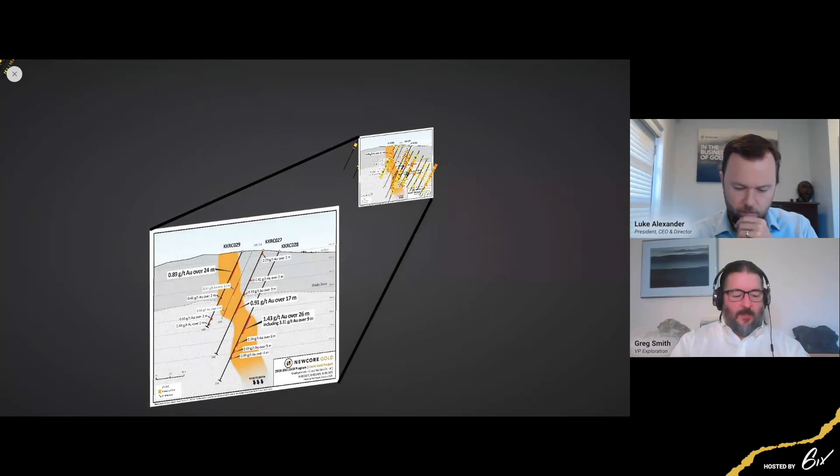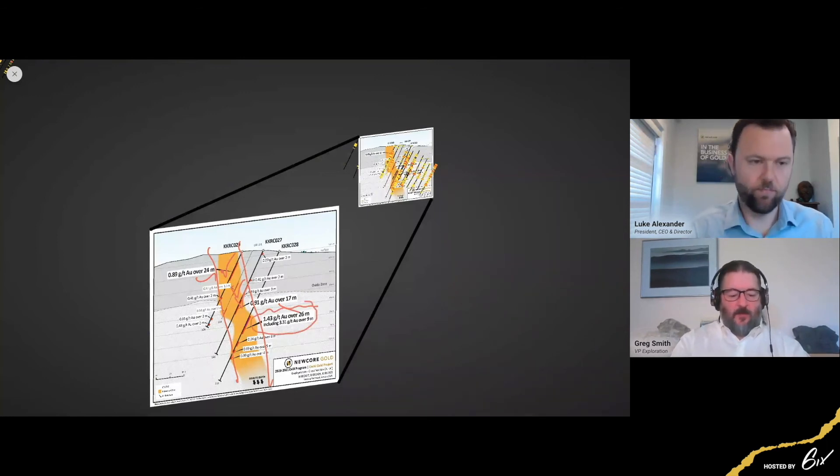So here's one of the sections. Good interpretation here, hitting the mineralization in all of these holes, 24 meters here, 17 meters here, highlighted by 1.43 grams over 26 meters, including 3.3 over 9.